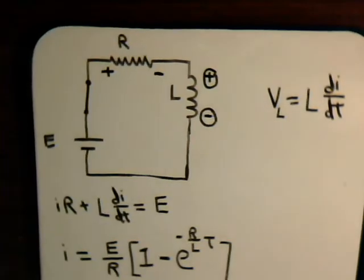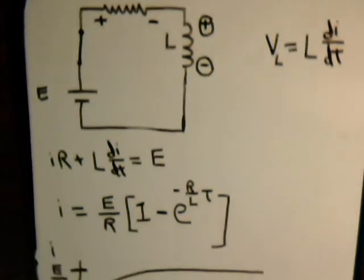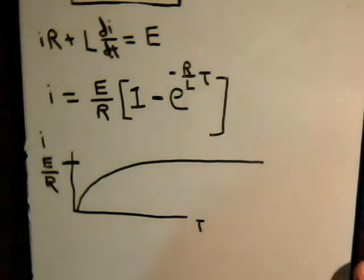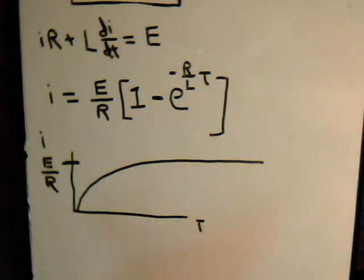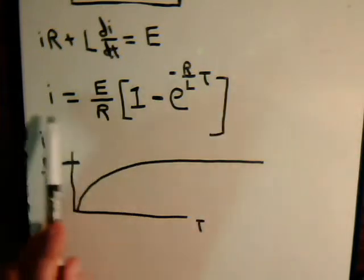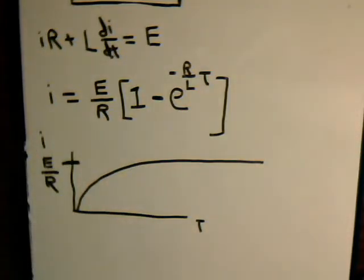We have this simple circuit, what would be the current flowing through it? It would just be E divided by R. But through the coil, it doesn't change instantaneously. It goes through this curve right here, which is predicated upon this equation right here.